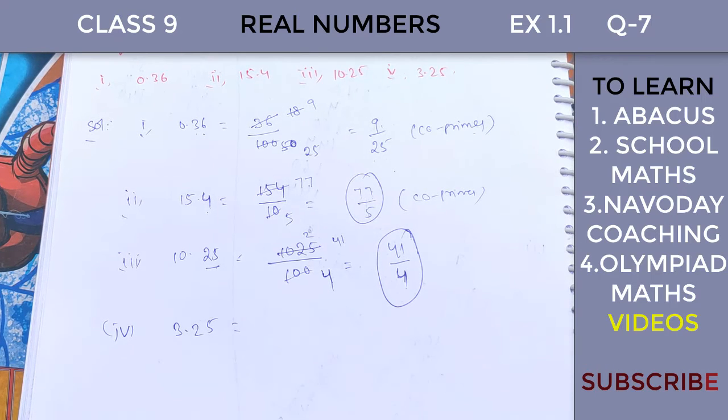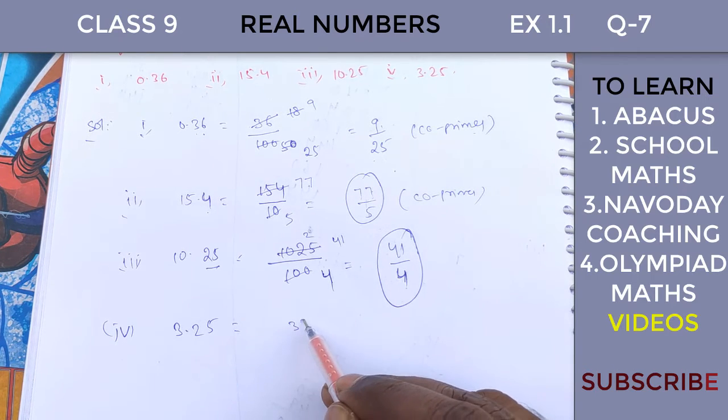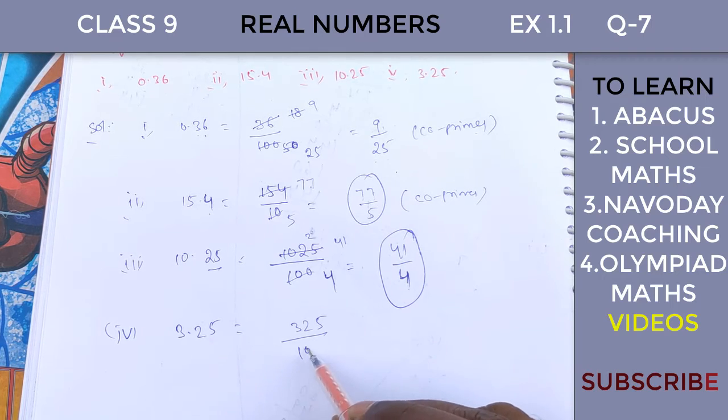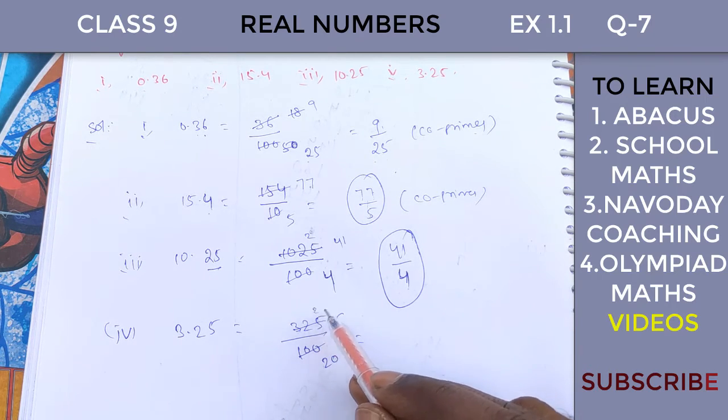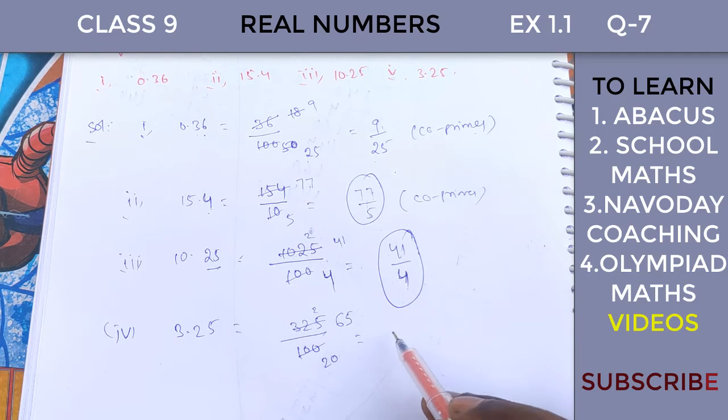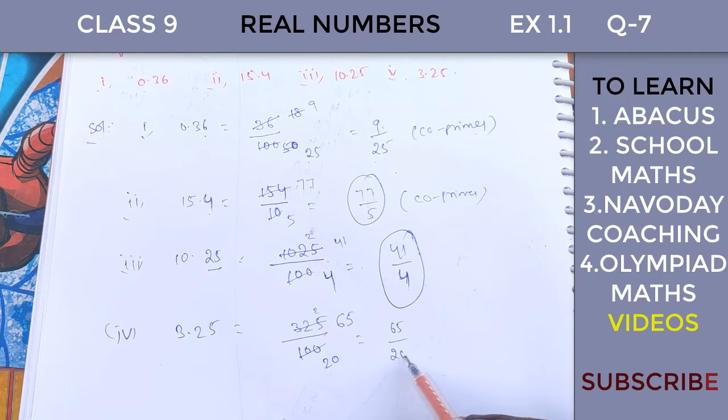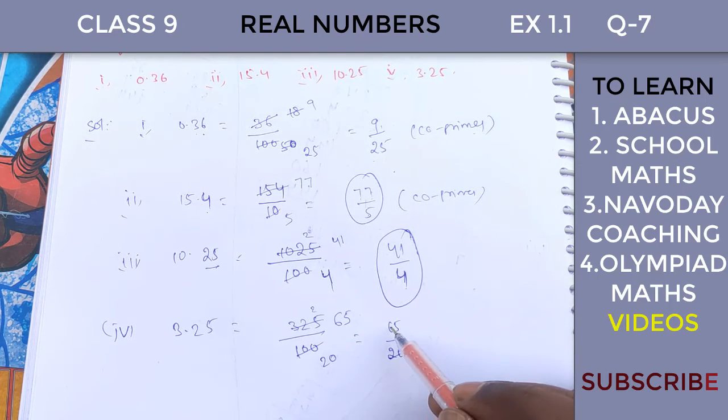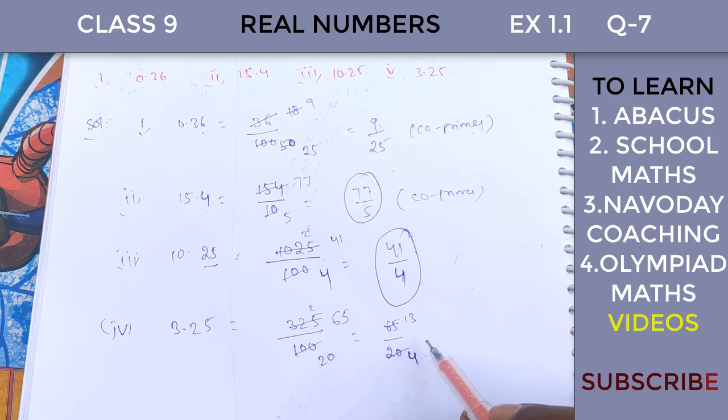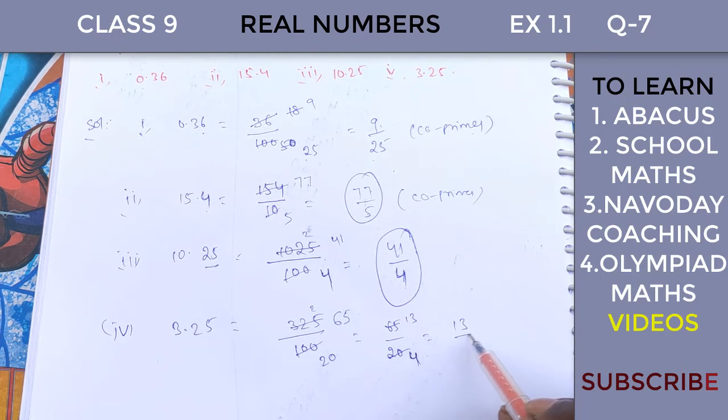Next, 3.25, the fourth one: 325 over 100. Cancel by 5: five into 325 is 65, five into 100 is 20. So 65 over 20. Cancel by 5 again: five 4s are 20, five into 65... So 13 by 4 is the simplified rational number.